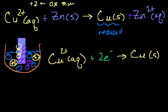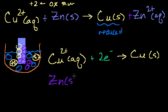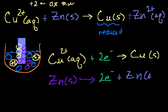Now let's see what happened to the zinc. The zinc starts completely neutral in the solid state — no extra electrons or deficiency of electrons. But once the zinc jumps into the solution, it has a charge, so it must have lost electrons. The half reaction for zinc: solid zinc reacts to produce 2 electrons and zinc 2+ aqueous as an ion in solution.